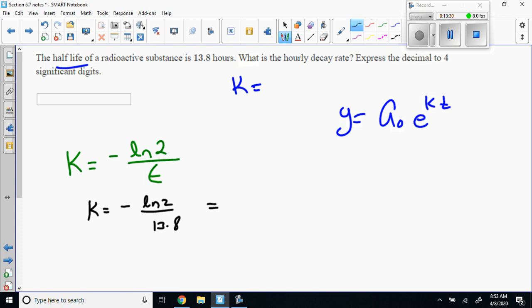I'm applying the negative after I get done with it because the natural log of 2 divided by 13.8 gives me a positive number, and I'm applying the negative because I know it's got to be a decay. This concludes section 6.7 part 1.